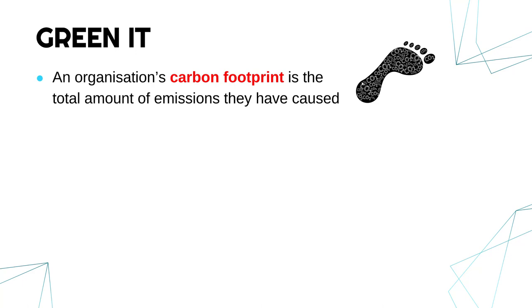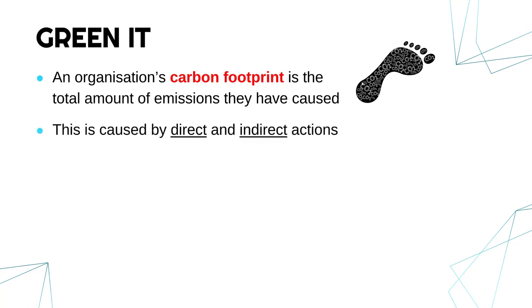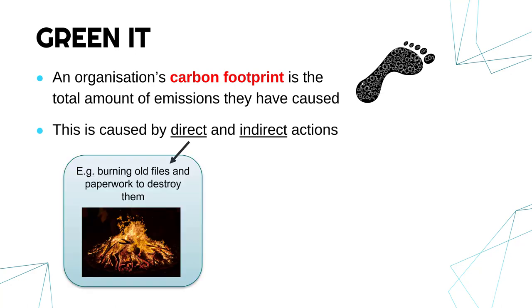Green IT is about trying to reduce the carbon footprint, to try and make it so the environment is less affected by our actions. Our carbon footprint is caused by both direct and indirect actions. Some things we do directly cause emissions — for instance, burning paperwork to destroy it directly causes CO2 to be released into the atmosphere.